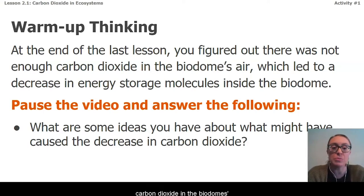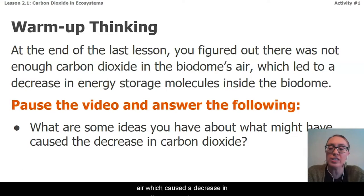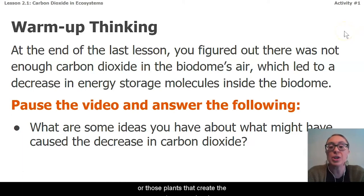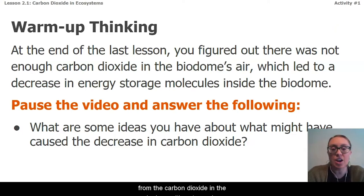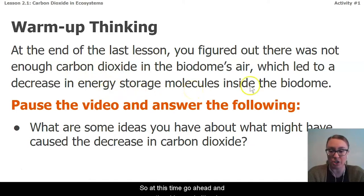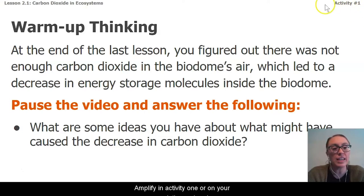The decrease in CO2 caused a decrease in energy storage molecules inside the biodome, because the producers — those plants that create energy storage molecules from carbon dioxide in the air along with water and sunlight — didn't have enough of this abiotic carbon from the carbon dioxide to turn into energy storage molecules. So at this time, go ahead and pause the video and either in Amplify in Activity 1 or on your paper, let's answer this question.